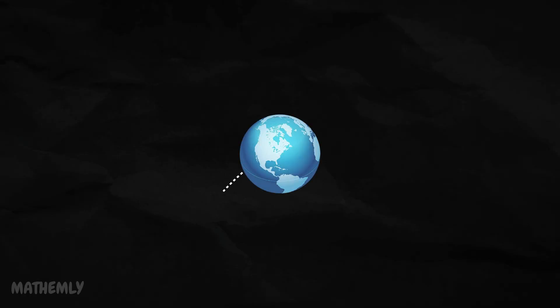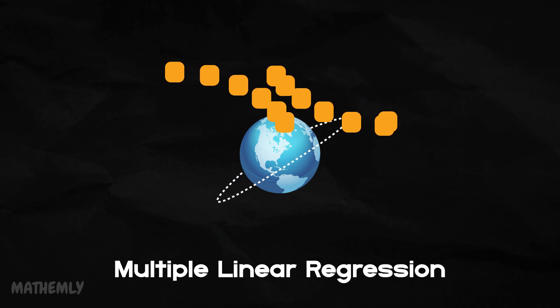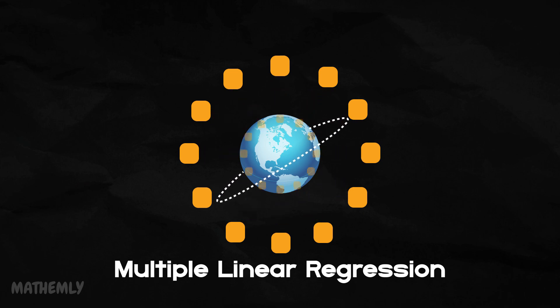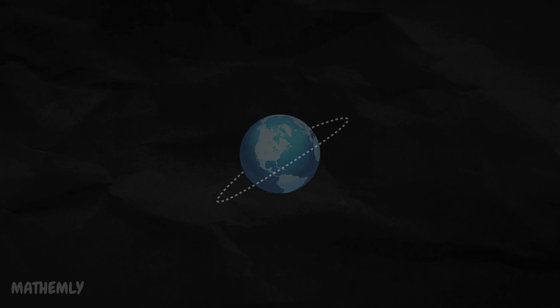In real-world applications, multiple linear regression is often the go-to tool because many situations involve multiple factors influencing an outcome. However, sometimes we encounter situations where only one factor affects the outcome, and that's where simple linear regression comes in. Simple linear regression focuses on modeling the relationship between two variables, one independent variable and one dependent variable. Let's explore a few examples where simple linear regression is useful.